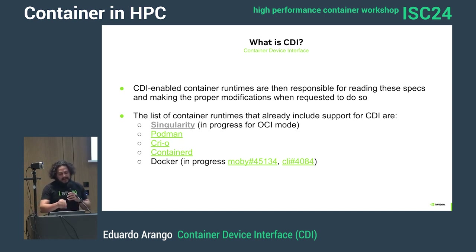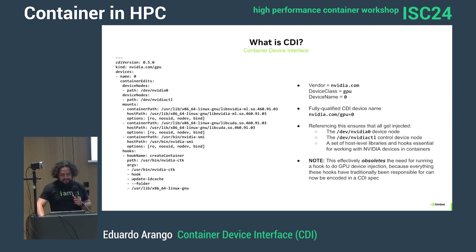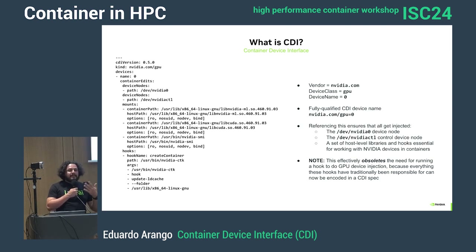For Singularity, CDI only works in OCI mode, which I think is also translated to namespace mode in Singularity. And how does this look? It's very similar to how Sarus implements OCI hooks to be better at MPI and hardware utilization.